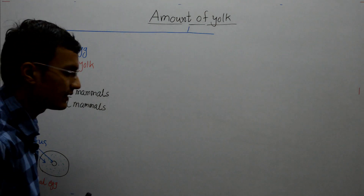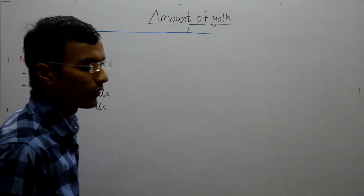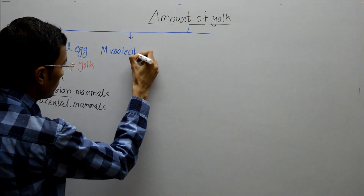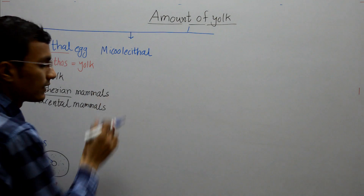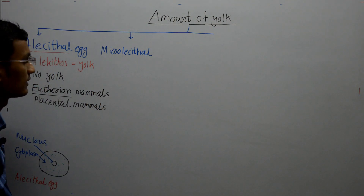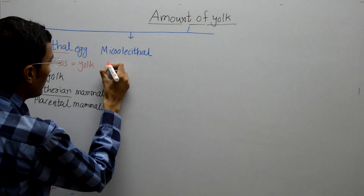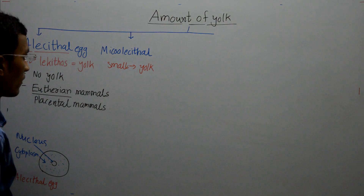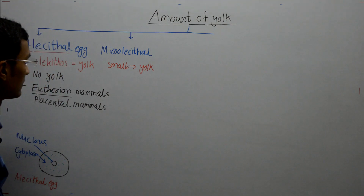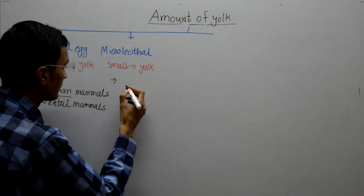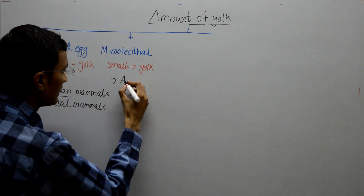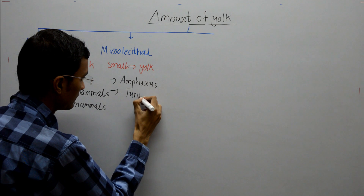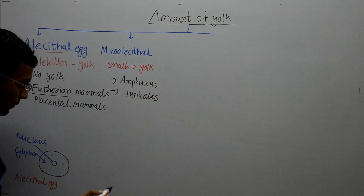The next type is the microlecithal egg. 'Micro' means small, so a microlecithal egg contains a small amount of yolk. Microlecithal eggs are seen in amphioxus and tunicates.